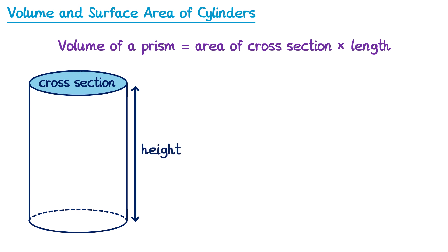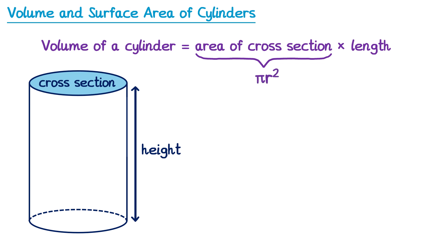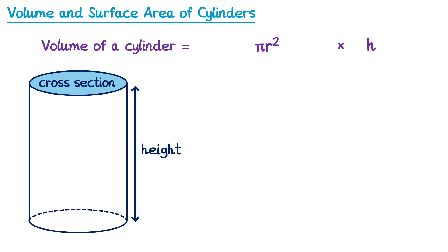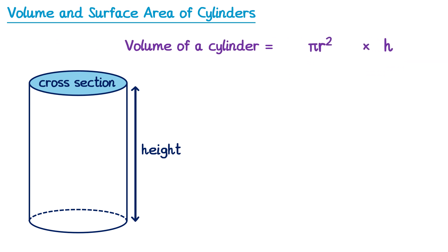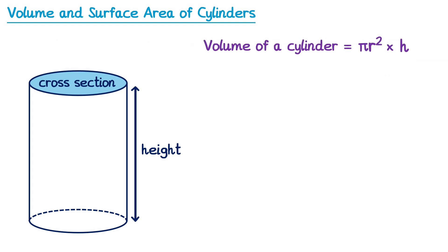So we can find the volume of a cylinder by doing the area of the cross section, which is a circle — so the area of a circle, which is given by πr², and then we multiply it by the length which we're now calling the height, so let's use the letter h. So to find the volume of a cylinder we do πr² multiplied by h, which we could just write as πr²h. This is the formula for the volume of a cylinder.